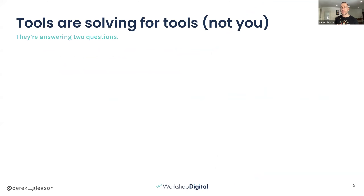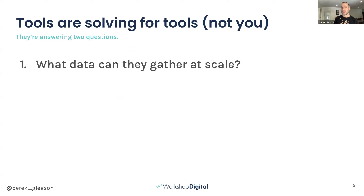What's not working, and why? One of the biggest things to understand up front is that all the tools we rely on — your Ahrefs, your BuzzSumo, your Moz, whatever it is — they are solving for tools, not solving for you. They're trying to answer: what data can they gather at scale? They need a huge database to attract a lot of people, and that usually means likes and shares, not necessarily the best things to inform content strategy.